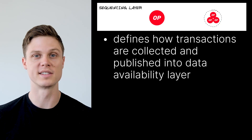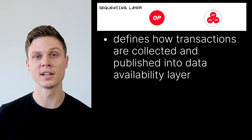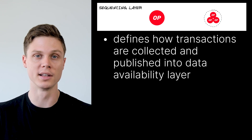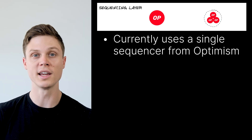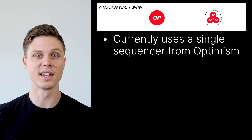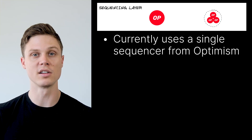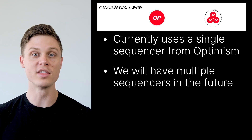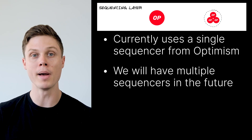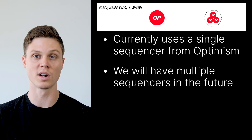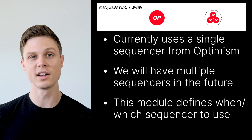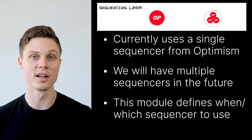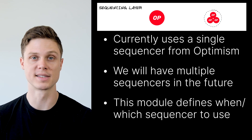The sequencing layer of the OP stack defines how transactions are collected and published into the data availability layer. Currently in the OP stack, there is a dedicated actor that runs a single sequencer, which is Optimism itself. However, in the future, it will be possible to have many sequencers running. The module in the sequencing layer would define when and how each potential sequencer is picked from that set.